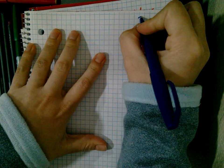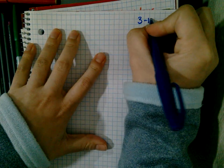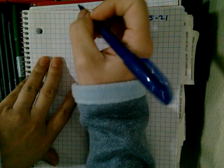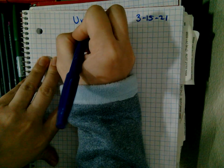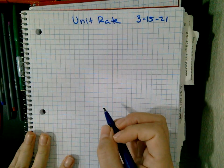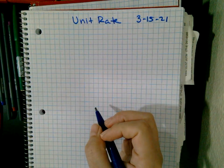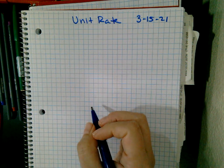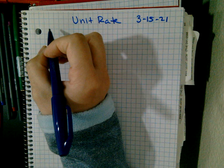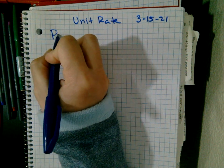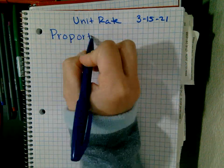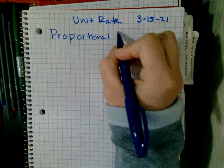All right, today's date is 3/15/21. You actually learned unit rate in sixth grade — I get to take that to like level 100 starting today. In seventh grade we don't usually call it unit rate, we call it proportional relationships.